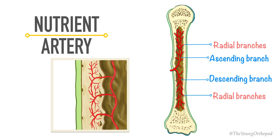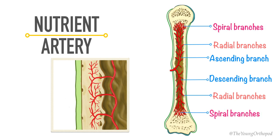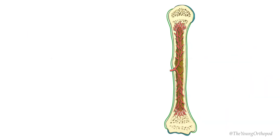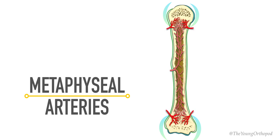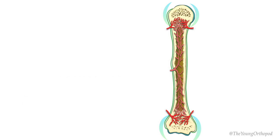At the metaphysis, the ascending and descending vessels divide repeatedly into smaller spiral vessels, which are joined by metaphyseal and epiphyseal arteries. Metaphyseal arteries, arising from the anastomosis around the joint, enter the metaphysis at the margin of the joint capsule attachment. These metaphyseal arteries anastomose freely with the spiral branches of the nutrient arteries, making the metaphysis the most vascular area of the long bone.